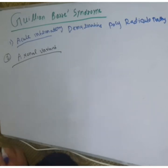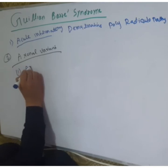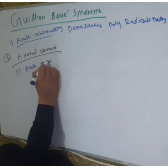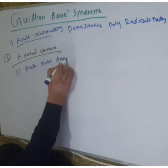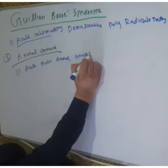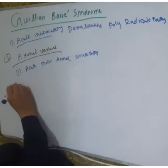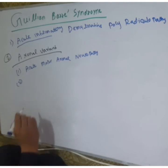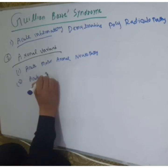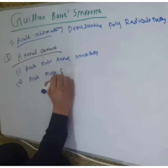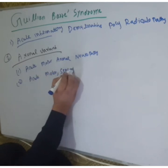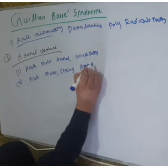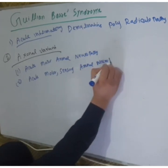The first axonal subtype is acute motor axonal neuropathy, and the second subtype is acute motor sensory axonal neuropathy — also referred to as acute motor and sensory axonal neuropathy.